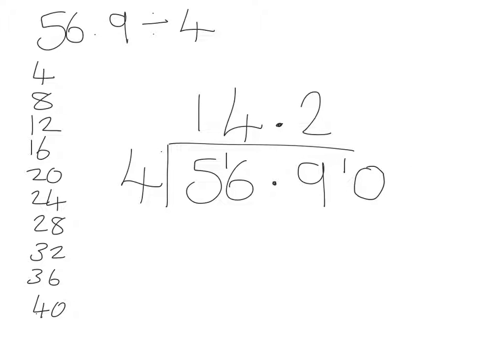I can just carry on. So 4 into 10, that'll go twice, remainder 2, and then put my 0 as a placeholder in. 4 into 20 goes 5 times exactly. So 56.9 divided by 4 equals 14.225.